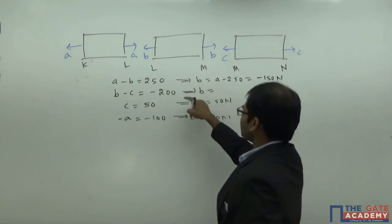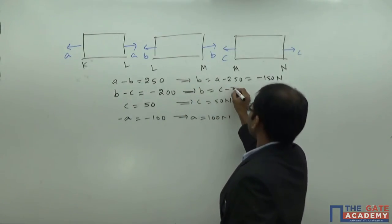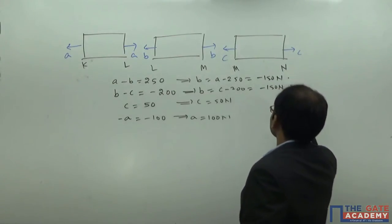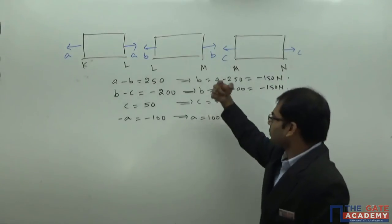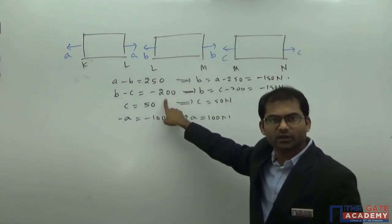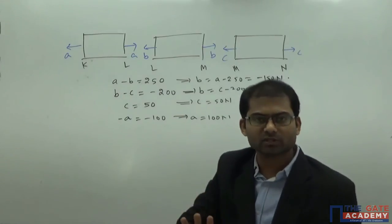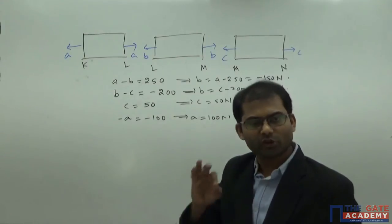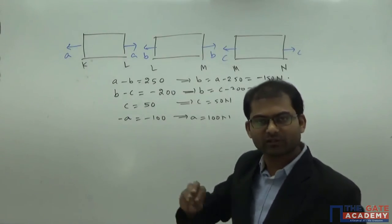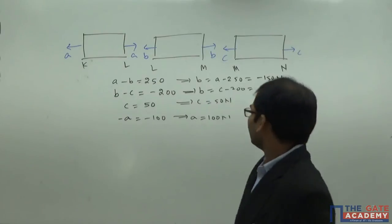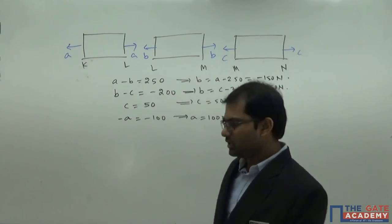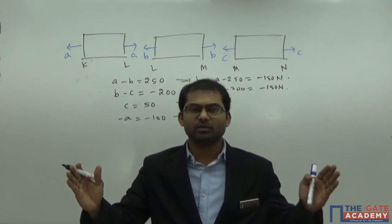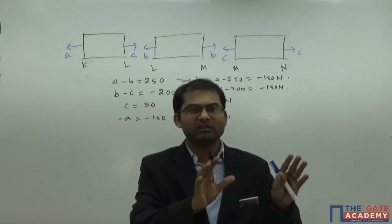Verifying B from the other equation: B equals C plus (minus 200) equals 50 minus 200 equals minus 150 N. We get the same answer from both equations — this should always occur when solving correctly. If you get a different answer, you have made a mistake. Now, the question asks for the total change in length: total change equals algebraic sum of individual changes of lengths.